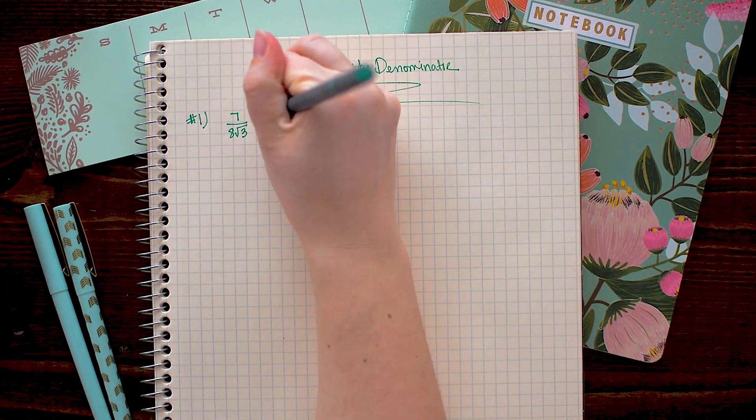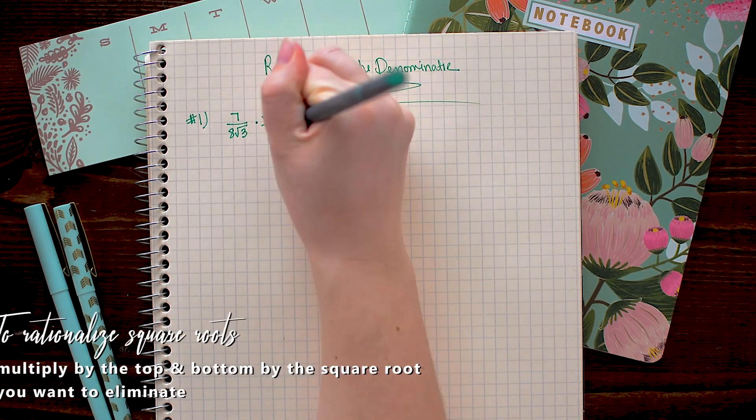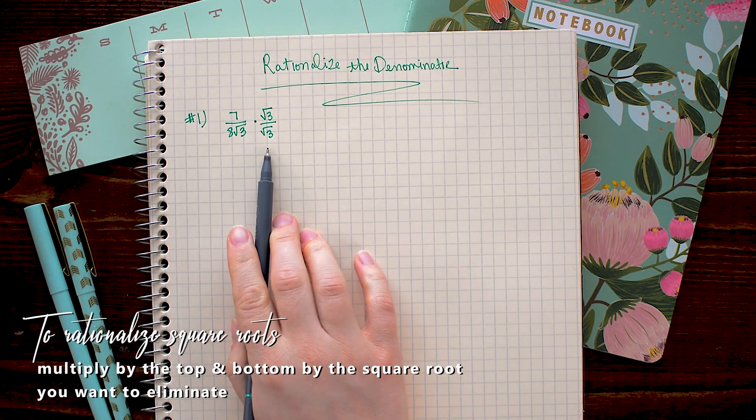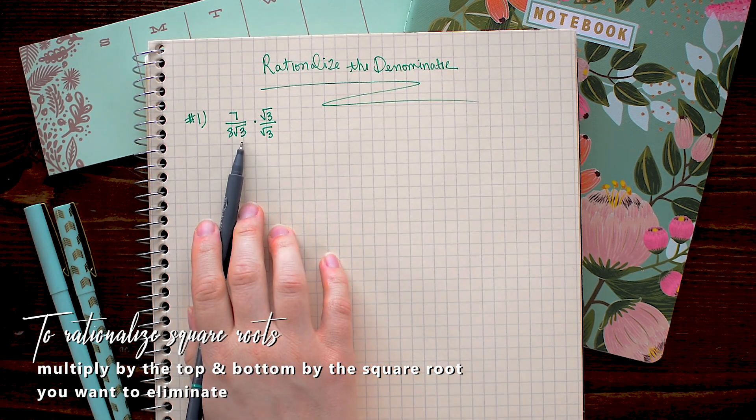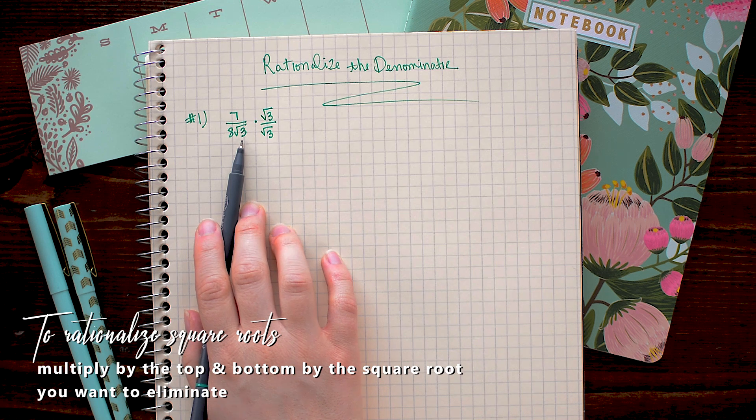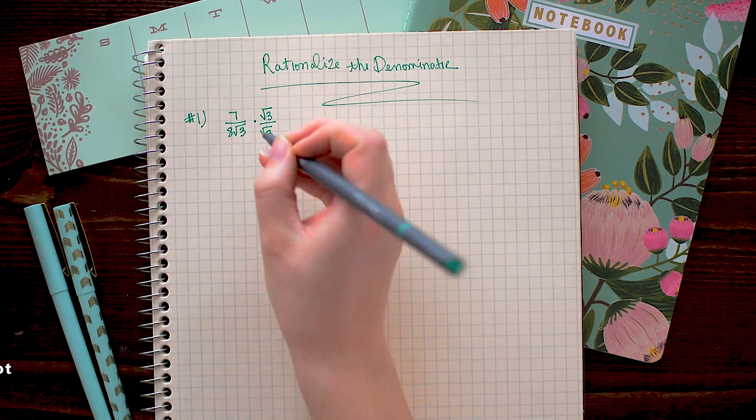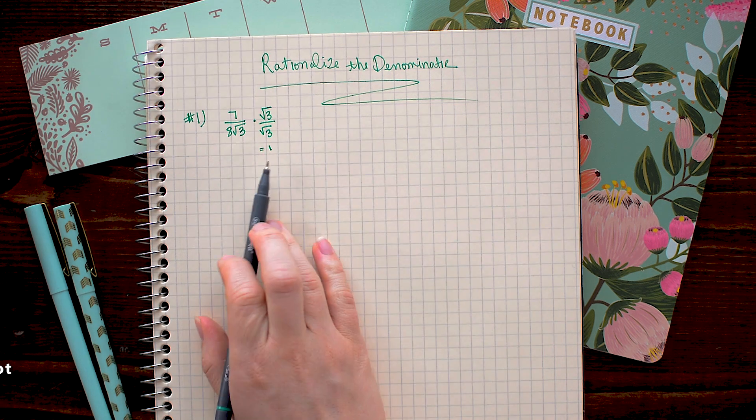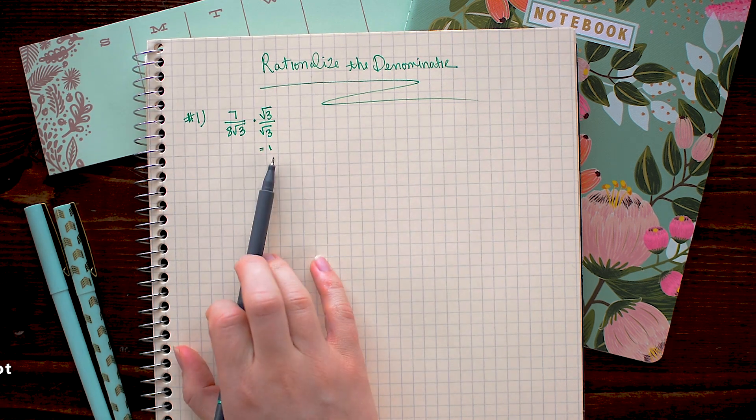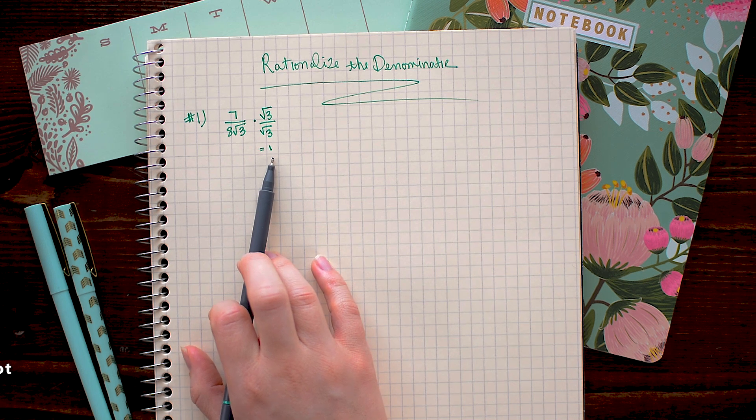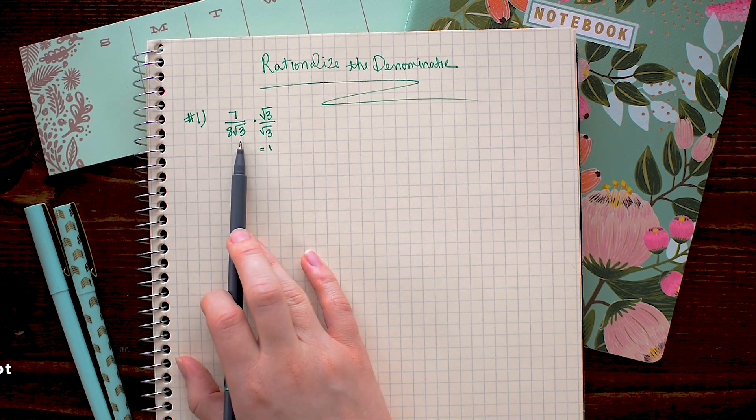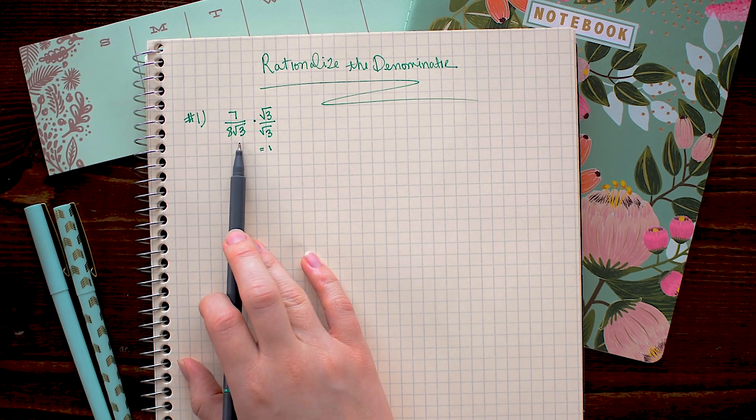So what you need to do is multiply by square root 3 over square root 3 to get rid of the square root 3 in the denominator. Now we can do this because square root 3 over square root 3 simply equals 1. And we know that anything multiplied by 1 remains the same. So although we're making the fraction look different, we're not altering it in any way.